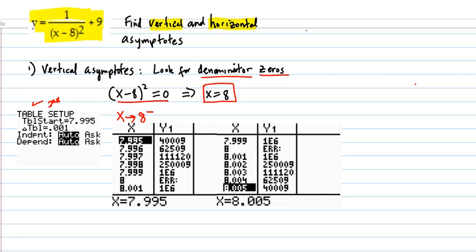So when you're at 7.995, you get this number, pretty large. 7.996 getting closer to 8, larger. 7.997 larger. And when you're at 7.999, you're at 1e6, that's 10 to the 6th power, that's 1 million.